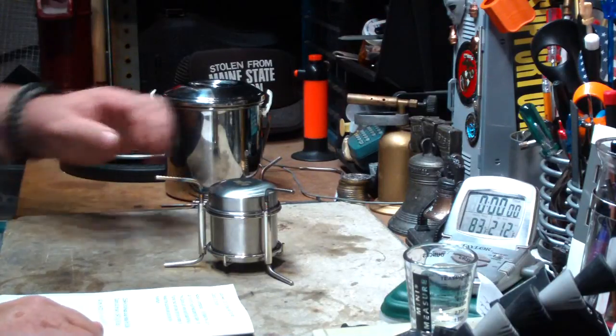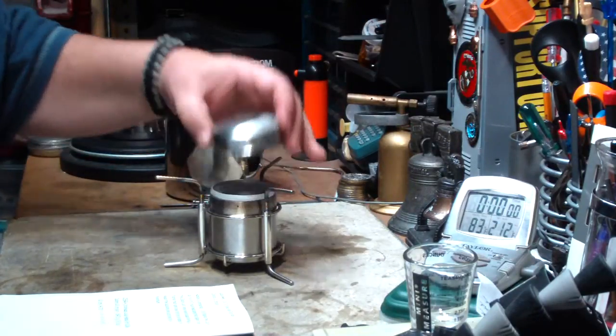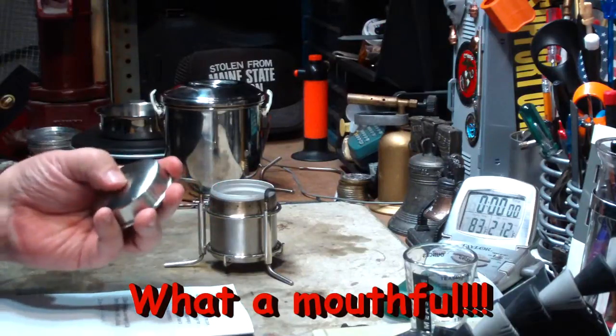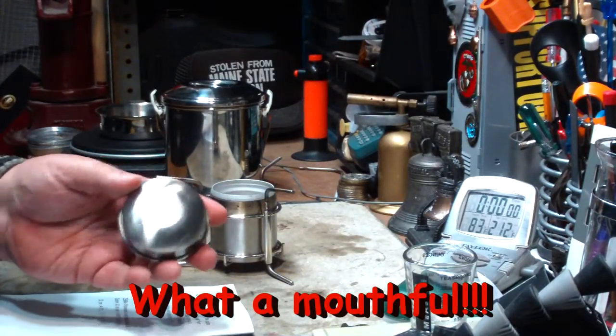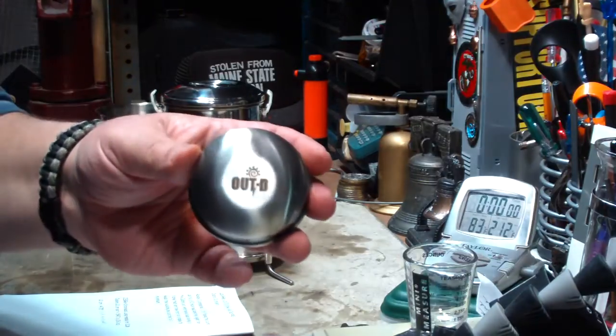Hi, Hiram here. I've been doing some tests on this ultra-safe, high-capacity backpacking stainless steel alcohol stove, which is also called the Out-D.